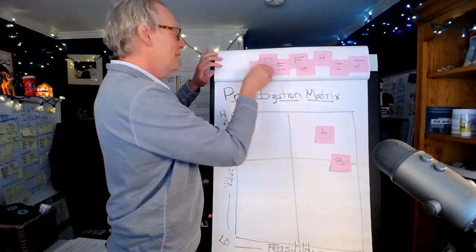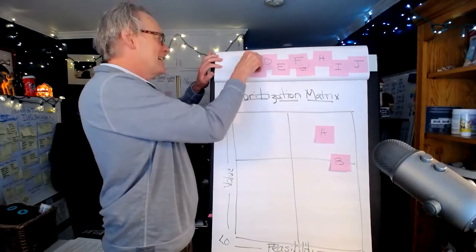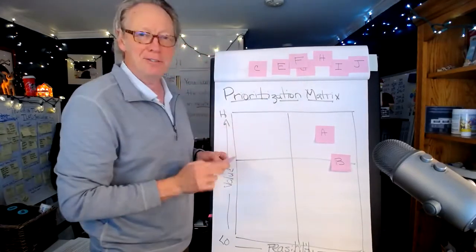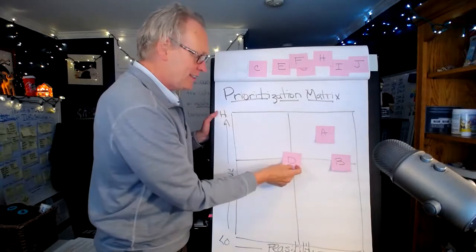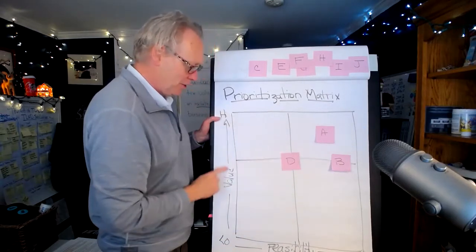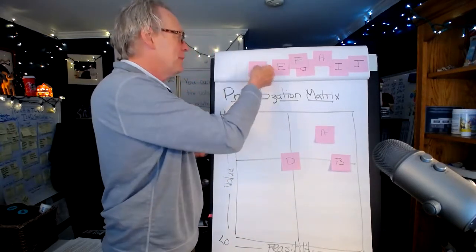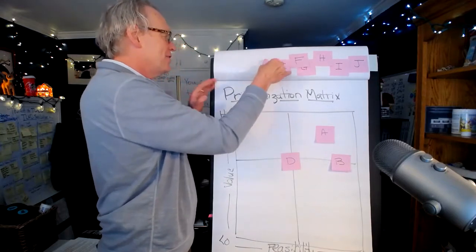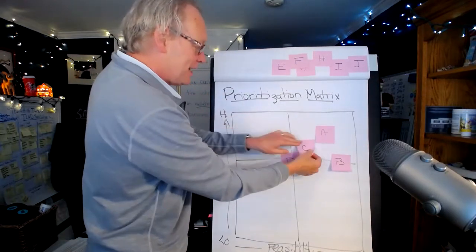Then we've got something like C comes along. Let's go to use case D—use case D is one of those things where it's got basically medium value, medium feasibility. And C is one of these things where it sits sort of right here.